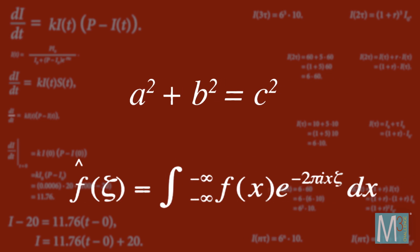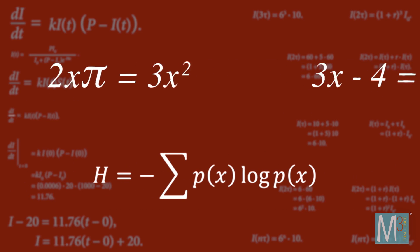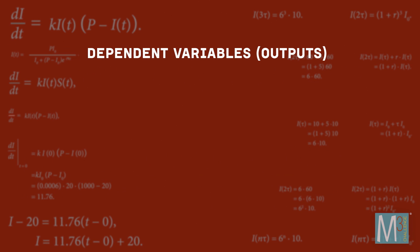The variables you need to develop your solution come from the perspective of the problem statement. Dependent variables are often called outputs. They represent the information you seek.